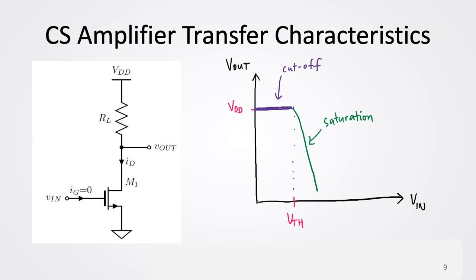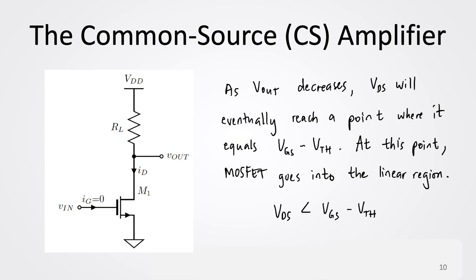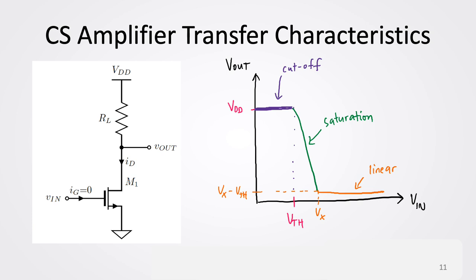As VIN continues to increase, VOUT decreases, and VDS will eventually equal VGS minus VTH. At this point the MOSFET transitions from saturation to linear. This happens when VDS becomes less than VGS minus VTH. If the corresponding VIN at that point is VX, then the intercept on the Y-axis would be VX minus VTH, and from that point you will be operating in the linear region. These are the voltage transfer characteristics of the CS amplifier.